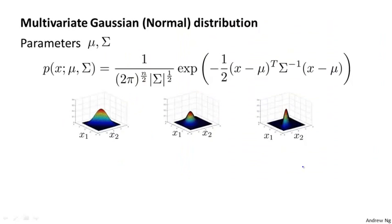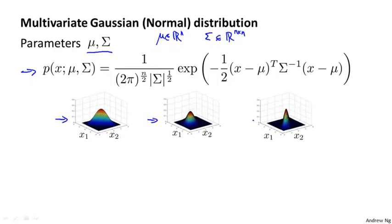To recap, the multivariate Gaussian distribution, or the multivariate normal distribution, has two parameters: mu and sigma. Mu is an n-dimensional vector and sigma, the covariance matrix, is an n by n matrix. Here's the formula for the probability of x as parametrized by mu and sigma. As you vary mu and sigma, you can get a range of different distributions, like the three examples we saw in the previous video.